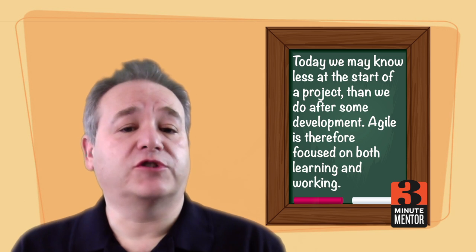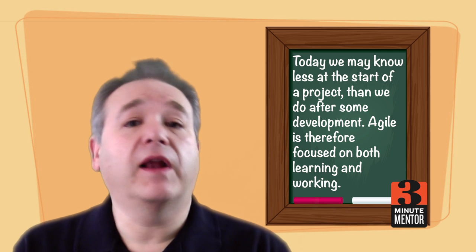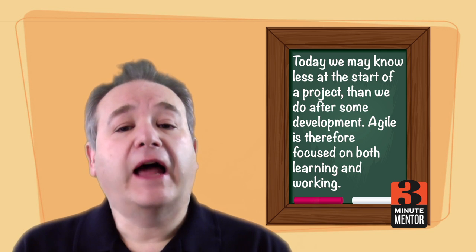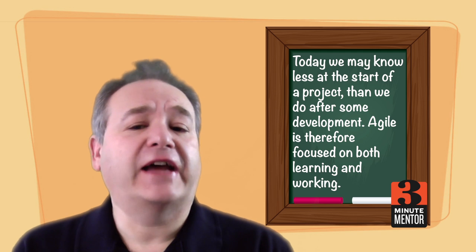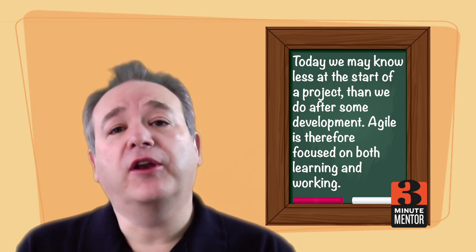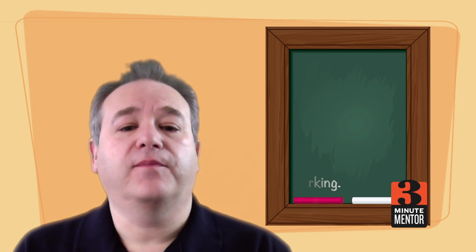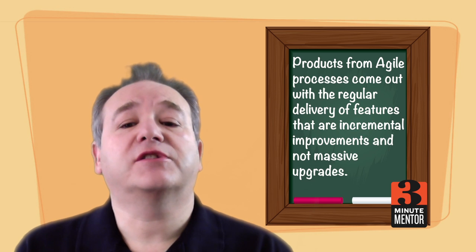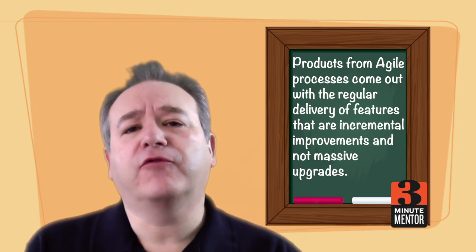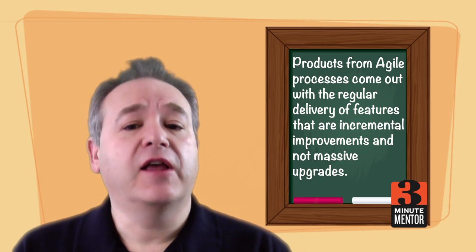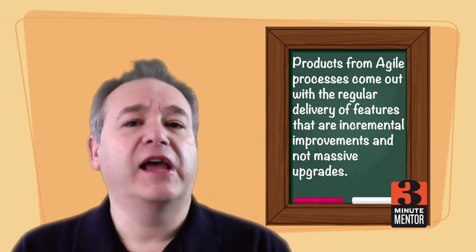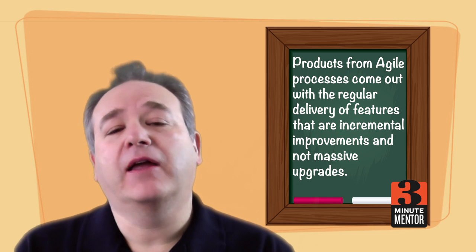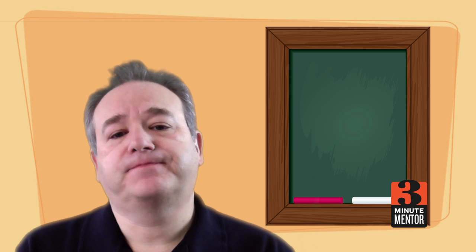Agile is therefore focused on that approach and it's about learning and working at the same time. That means lots of things like feedback loops, inspections, and many steps along the way. Products from agile processes come out with a regular delivery of features or capabilities that are incremental improvements and not suddenly big-bang massive upgrades.